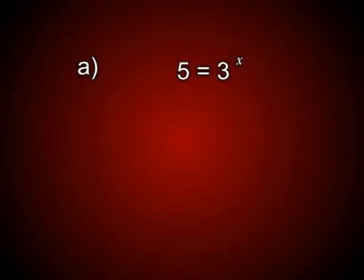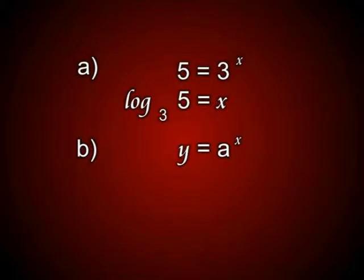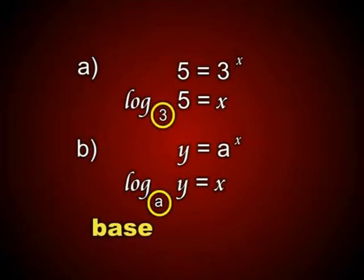If we bring in a log, it's going to become: log base 3 of 5 equals x, and log base 3 of 5 can be solved very easily on your calculator. Therefore, we can surmise that if y equals a to the x, then log base a of y equals x. The 'a' — and in the previous example the 3 — is known as the base.